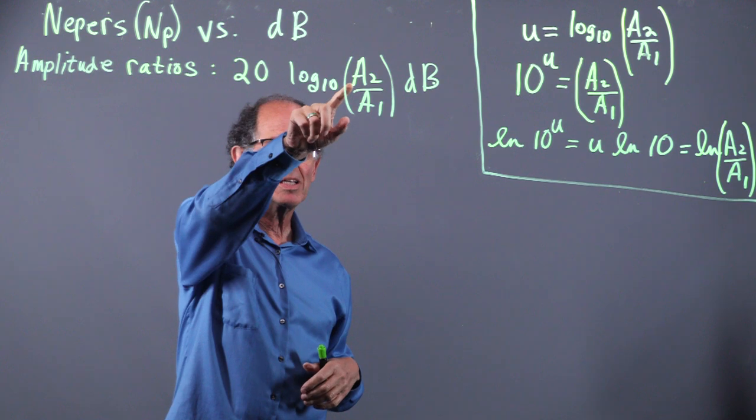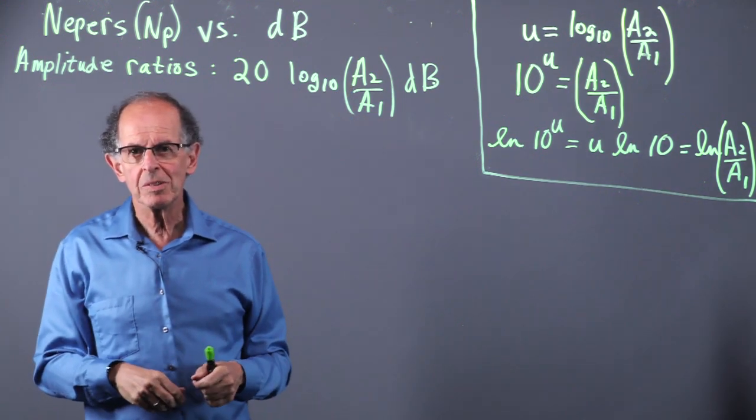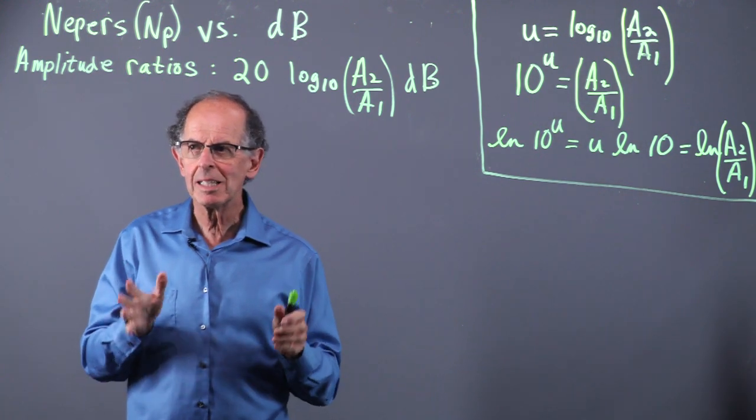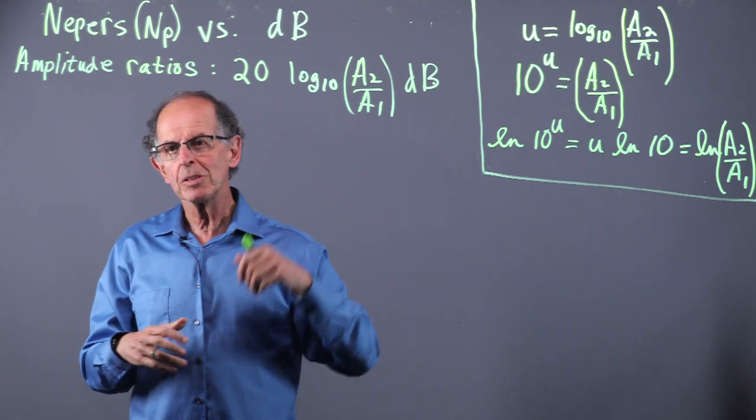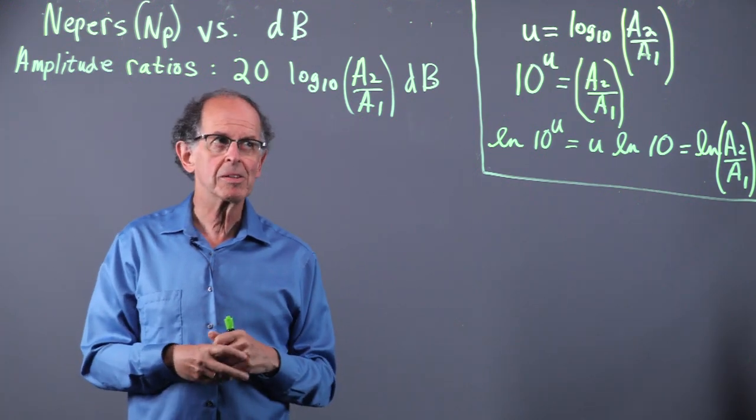20 log to the base 10, A2 over A1 dB. What are the units of dB? No units. They're just like radians. They indicate in its original setting sound pressure but taken over into electrical engineering.